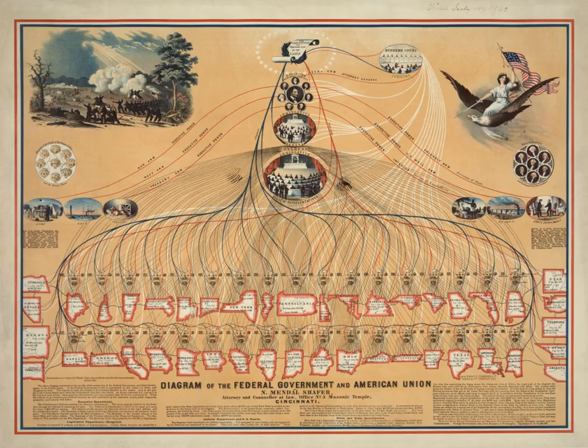Congress has the power to remove the president, federal judges, and other federal officers from office. The House of Representatives and Senate have separate roles in this process. The House must first vote to "impeach" the official. Then, a trial is held in the Senate to decide whether the official should be removed from office. Although two presidents have been impeached by the House of Representatives — Andrew Johnson and Bill Clinton — neither of them was removed following trial in the Senate.